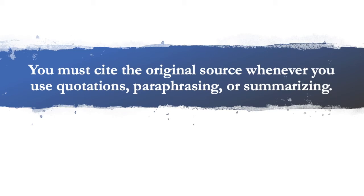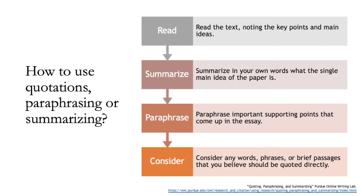When you want to use the ideas of another author in your paper, you can consider using this formula to get at the key ideas of their work. This is an important process for fully understanding another scholar's work while finding the key ideas that you might want to reference in your own writing. The first step would be to read or skim the text, noting the key points and main ideas. Next, you can summarize in your own words the overarching idea behind the text. Next, you can paraphrase supporting points in your own words. Finally, you'll want to consider whether there are any words or short passages that you think should be quoted directly. Your research paper is likely to contain a combination of direct quotes and paraphrased or summarized ideas.